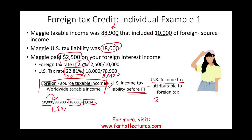Now Maggie paid $2,500 in foreign taxes. How much credit are we going to give her? We're only going to give Maggie $2,024 — the lesser of what she paid ($2,500) and what she should have paid on that income in the US ($2,024). The difference, $476, is unused. Maggie can go back one year and use that credit, or she can carry it forward for the next 10 years.